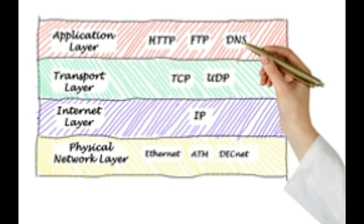TCP/IP is another networking protocol, which is more advanced than the OSI. The main difference between these two protocols is that the OSI is older than TCP/IP, and it does not support internetworking. The OSI model diagram was developed to explain the working of various inter-computer communications and was invented before the advent of the internet.